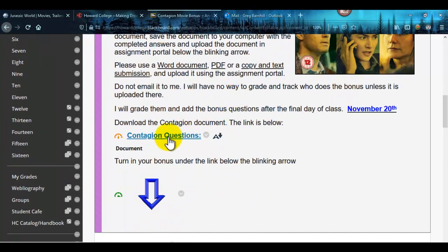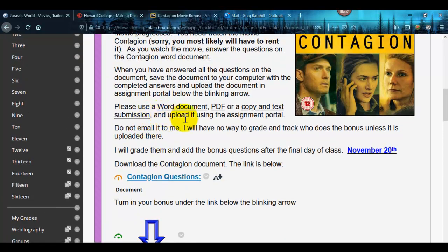You're gonna download this document and save it to your computer. It must be either as a Word document when you go to turn it in. For some reason some people like PDFs—that's fine, you can convert those usually from a Word document. Or you can copy and text your entire document in what's called a text submission.